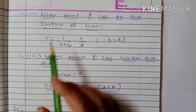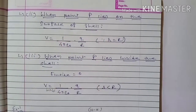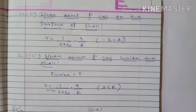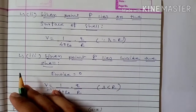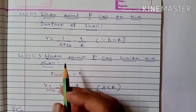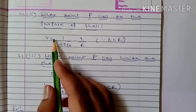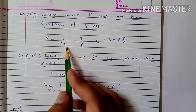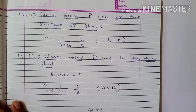When point P lies on the surface of the shell, the distance r equals the radius R. So the electrostatic potential on the surface of the shell is 1 upon 4π ε₀ into q by R.